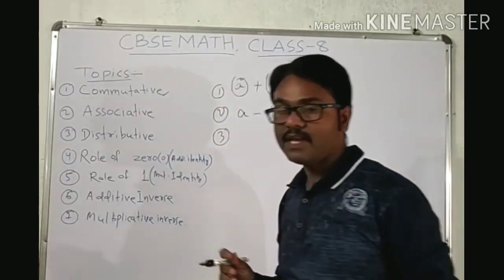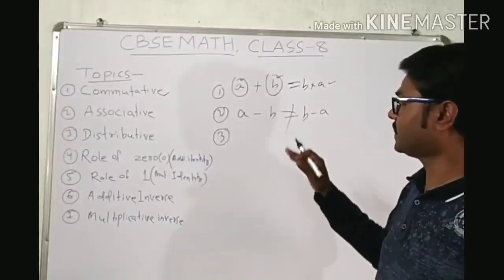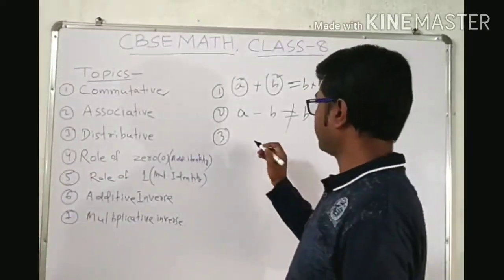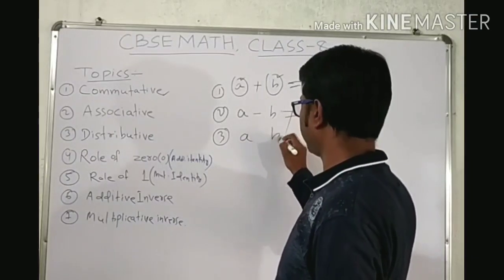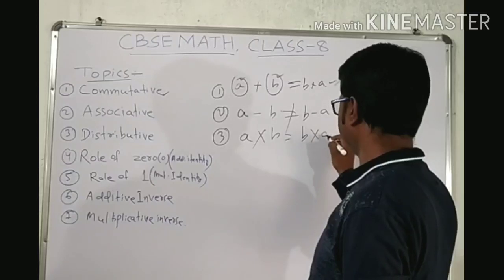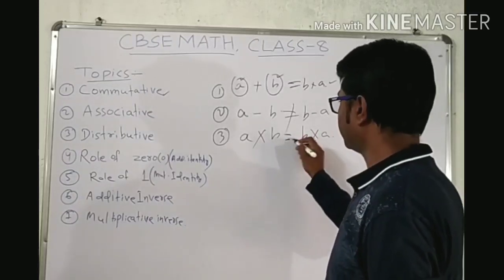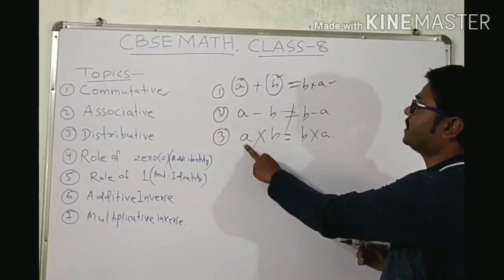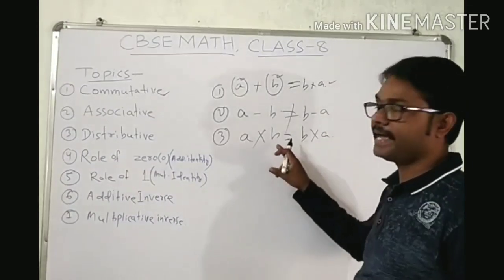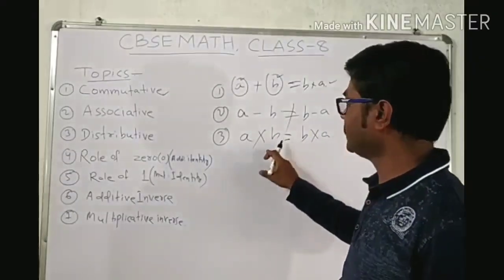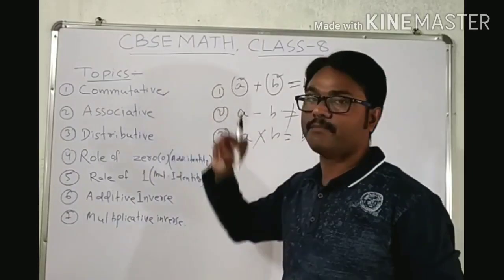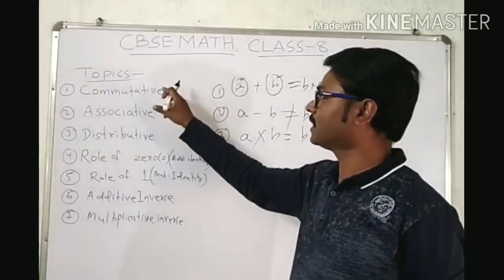Third one is multiplication. Check whether multiplication is commutative for rational numbers or not. If A and B are rational numbers, then A into B equals B into A. That means if you multiply two rational numbers and reverse the order, the answers are the same. Multiplication is commutative for rational numbers.